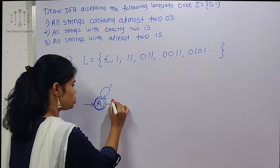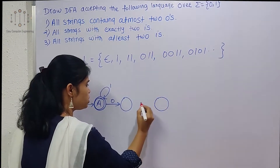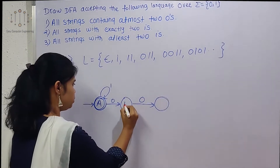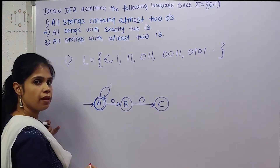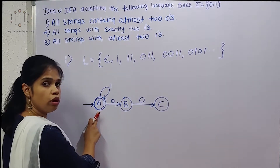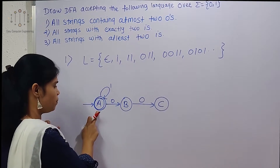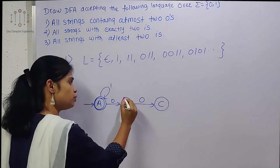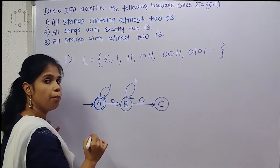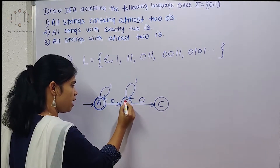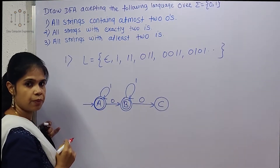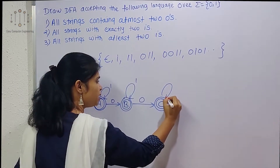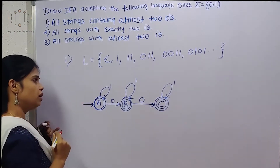For at most two zeros, we take two more states B and C. We can accept a maximum of two zeros. If there is no 0 but 1 is possible, A remains a final state. We can accept one single 0 and any number of 1s — state B is also a final state with a self-loop on 1. Similarly, state C is also a final state with a self-loop on 1.